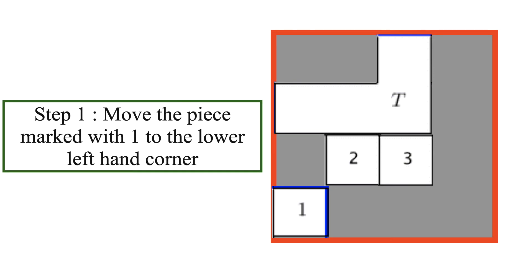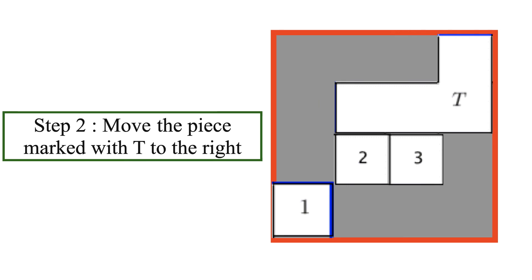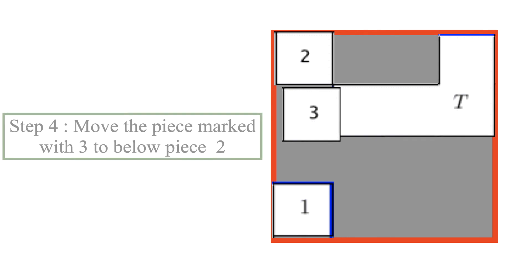In step 2, move the piece marked with T to the right. In step 3, move the piece marked with 2 to the upper left corner. In step 4, move the piece marked with 3 to below piece 2.